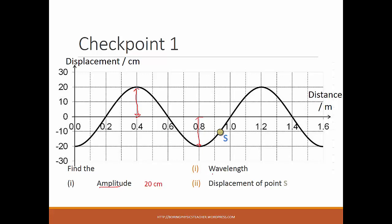If you need to find the wavelength, again for a displacement-distance graph, this would be the wavelength. For easy navigation, you can use peak to peak, or if you want trough to trough, it doesn't matter. Taking trough to trough, you find that this is 0.8 — and do take note, sometimes this is not in centimeters but in meters — so it's 0.8 meters.